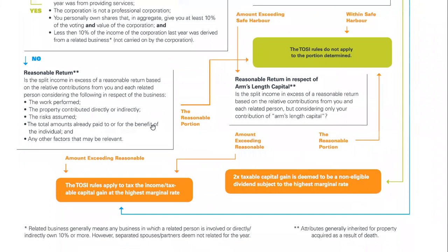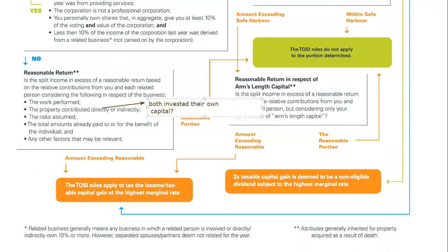We can just follow that down. Again, work performed, contribution of property — now this might get an exemption here, the contribution of property. And this is where I would want to lean on a tax professional to get an answer, because it is actually possible that both started the business with some of their own capital. Maybe there's a portion here that might be considered reasonable and to which TOSI would not apply. I can't make a definitive answer there — we'd have to know many more facts, and honestly you would need a better level of understanding of these rules until we start to see some tax rulings.